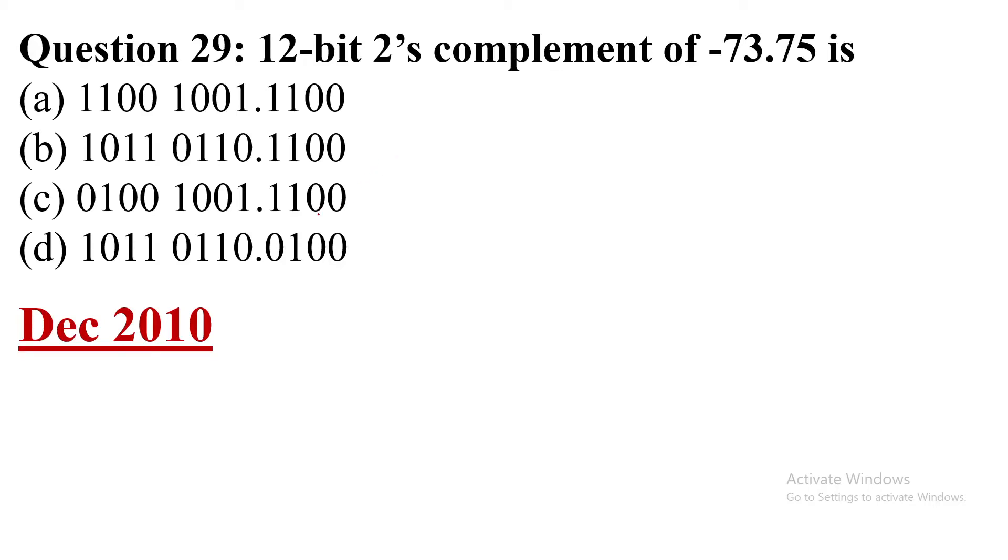Hi everyone, in this video I am going to share with you a UGC NET exam CSE question. This question is asked in December 2010, question number 29: 12-bit 2's complement of minus 73.75 is what?